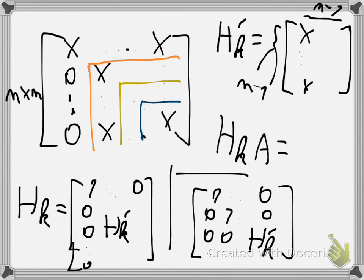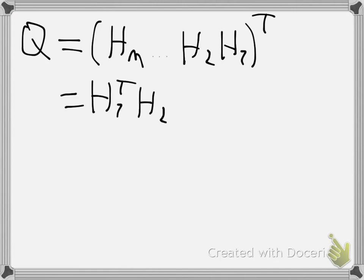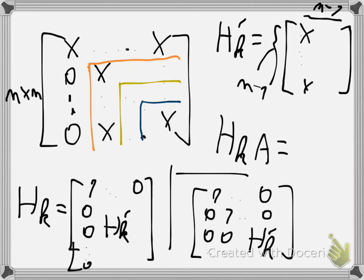You get your upper triangular matrix, and then your Q equals the product of all your Householder transformation transposes: H1 transpose, H2 transpose, all the way to HN transpose. That's how you do it in higher dimensions — each time considering only the sub-matrix, adding 1s in the diagonal and 0s in the corresponding rows and columns, and inputting the Householder transformation of the sub-matrix to multiply with A again.